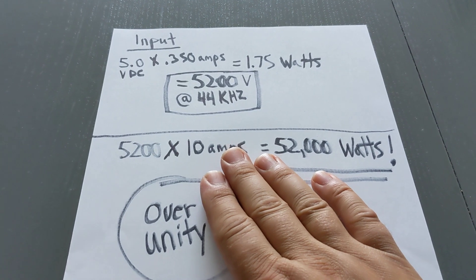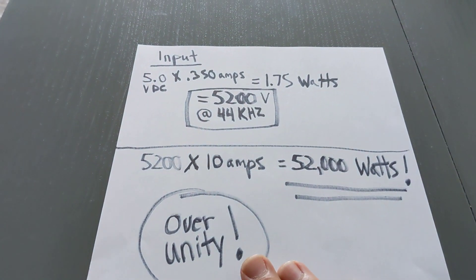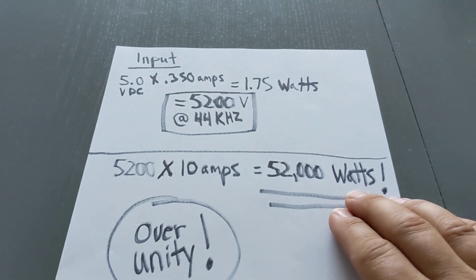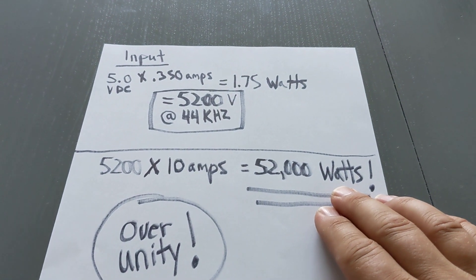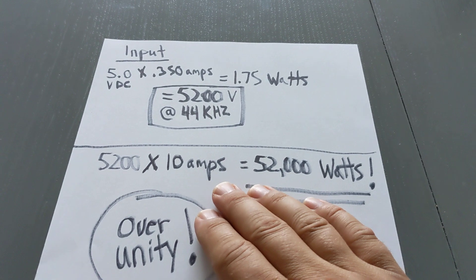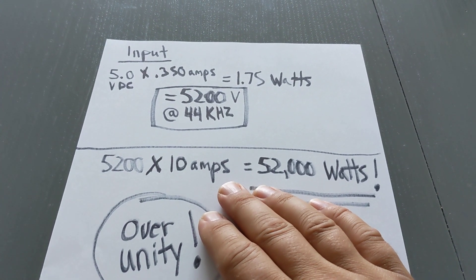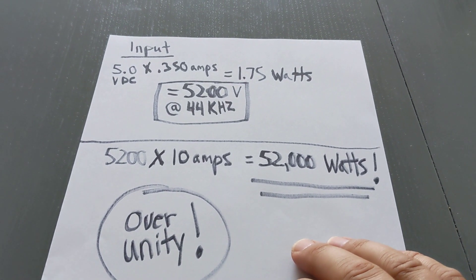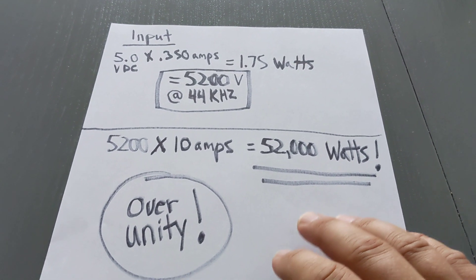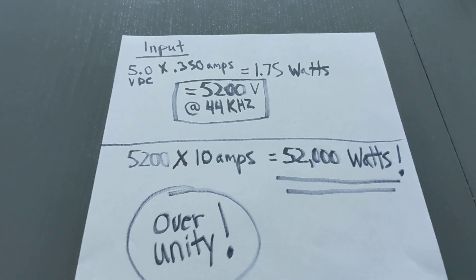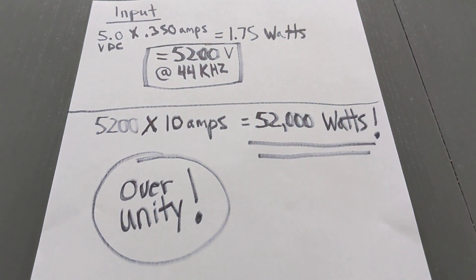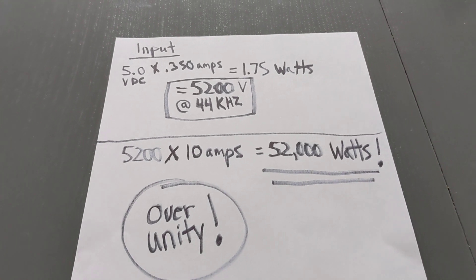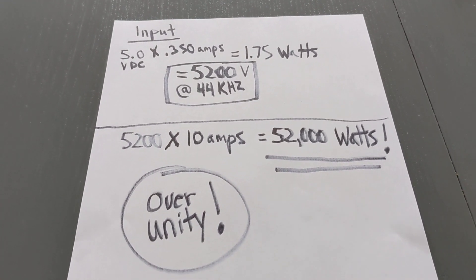So now we know we got a huge amount of power. We got some amps behind it. This is over unity because I'm only putting in 1.75 watts and I'm getting 52,000 watts out at 10 amps. Now, the voltage, obviously, we're going to have to break it down to 120 volts AC in order to use it. So right there, this is an over unity system, hands down, by far.